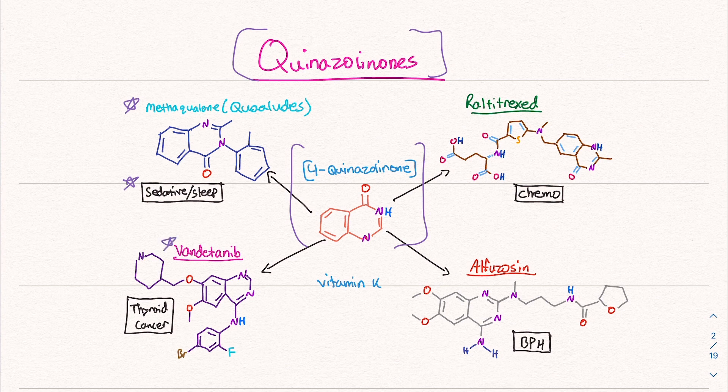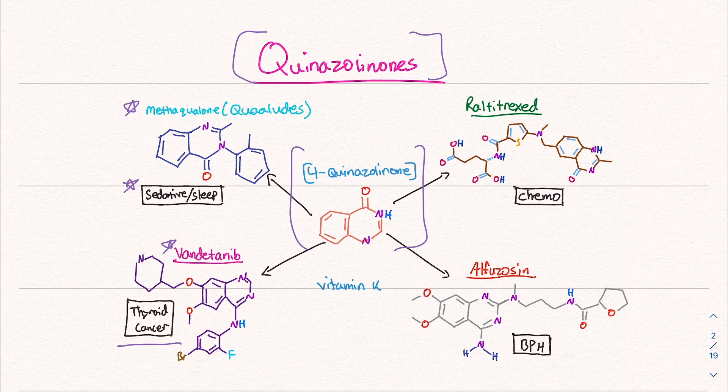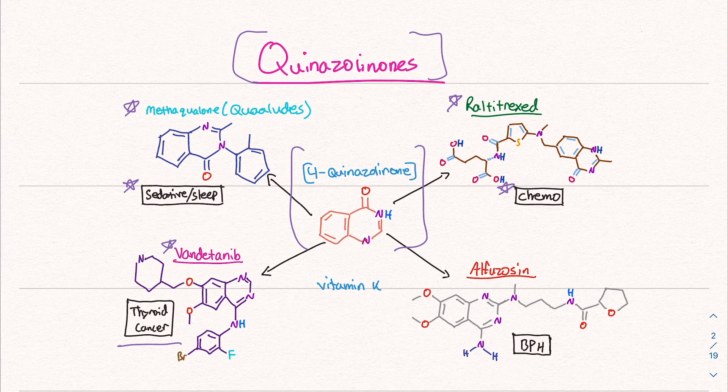We have methoqualone, a sedative used for sleep. But then we have vandetanib, a treatment for thyroid cancer. Then we have raltitrexed, a chemotherapy drug. We also have alfuzosin used for benign prostatic hyperplasia, or in other words, enlarged prostate. And all of these come from the substance 4-quinazolinone.